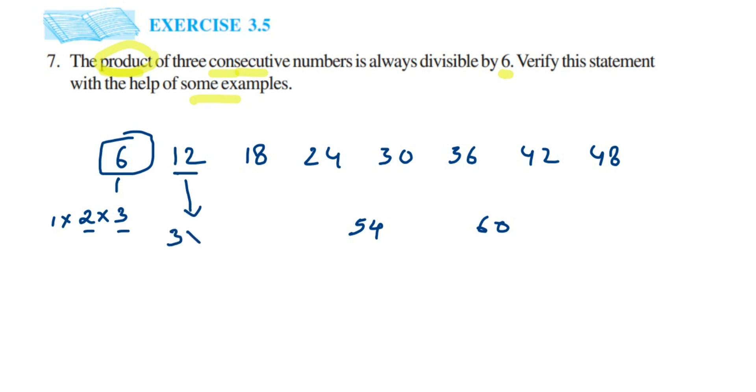But look at 12 here. 12 can be written as 3 times 4 equals 12, and 3 and 4 are like two consecutive, but I want one more number because we're asking 3 consecutive numbers. So 12 is not the answer.